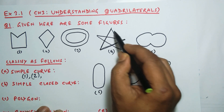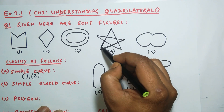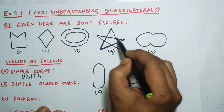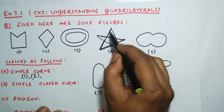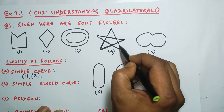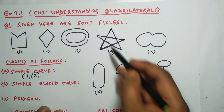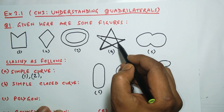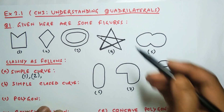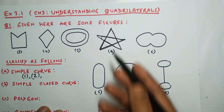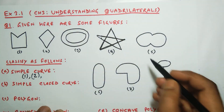Number four is very clear. If I draw it, I started from here, went here, then like this — so it intersected here, intersected here, and intersected here. It has intersected a total of five times. So this is not a simple curve because it has intersected itself.